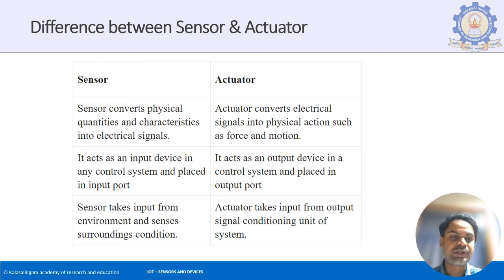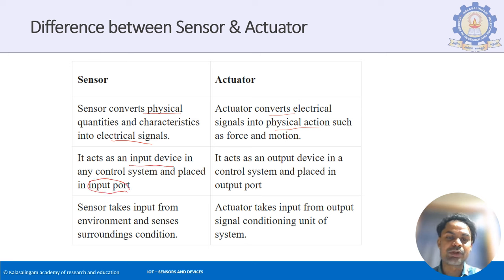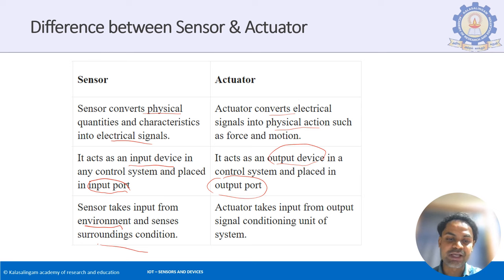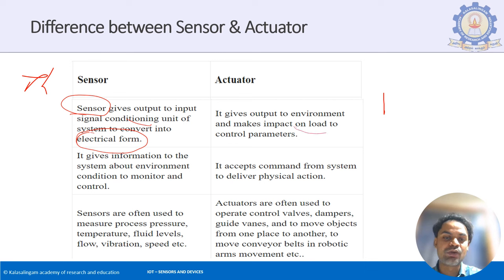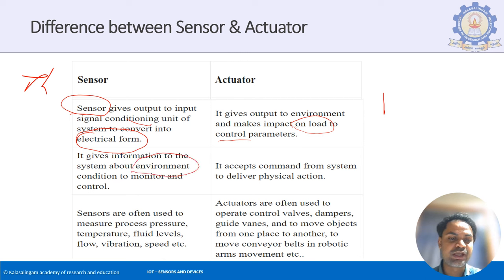The difference between a sensor and actuator: a sensor converts physical quantities into its electrical signal, while an actuator converts the electrical signal into a physical action. A sensor is an input device placed at the input port; an actuator is an output device placed at the output port. The sensor takes input from the environment and senses conditions, while the actuator takes the output conditioning signal and delivers a physical action.